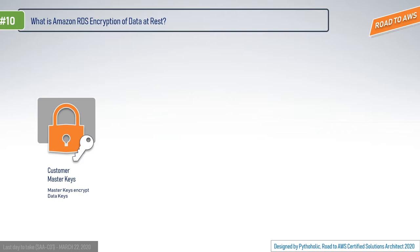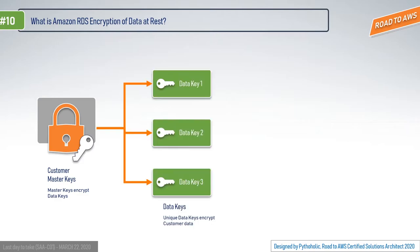Amazon RDS encrypts your database using keys you manage with AWS Key Management Service (KMS). The same keys are used to encrypt the database instance. Data stored at rest in the underlying storage is encrypted, as are automated backups, read replicas, and snapshots. RDS encryption uses the industry-standard AES-256 encryption algorithm.